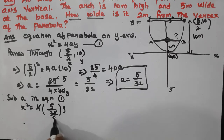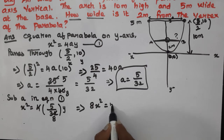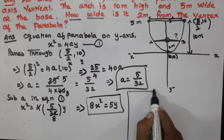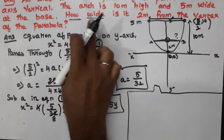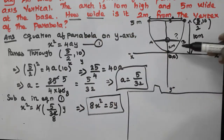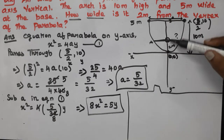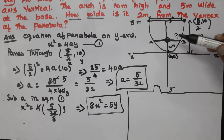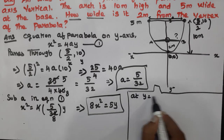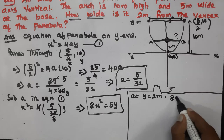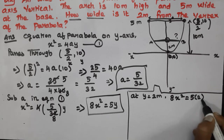Substituting the value of a back into equation 1: x² = 4 × (5/32) × y, which simplifies to 8x² = 5y. Now for y = 2: 2x² = 5y gives 4x² = 10.